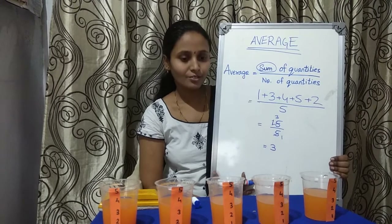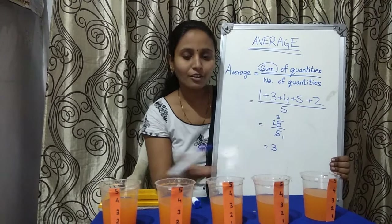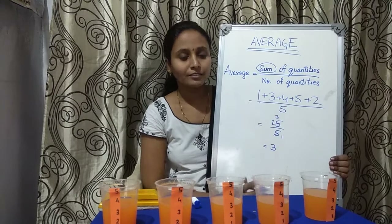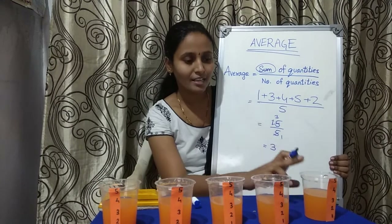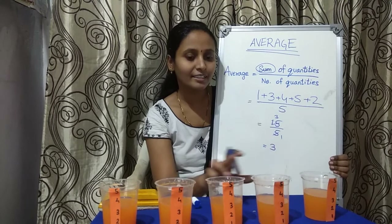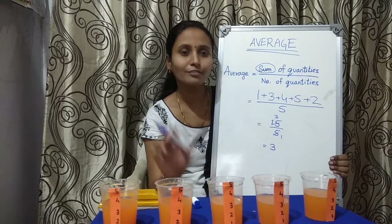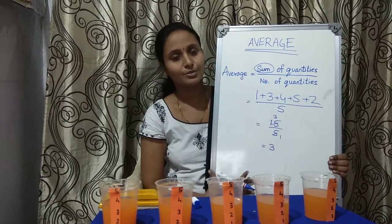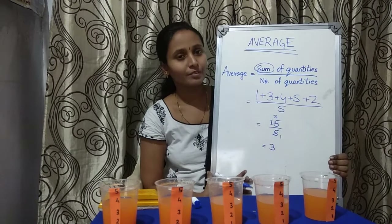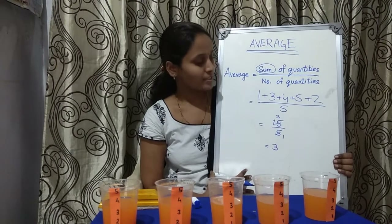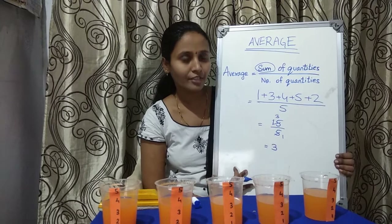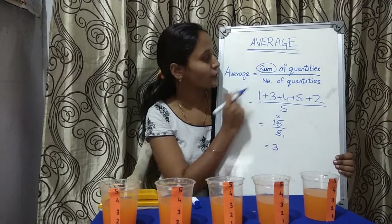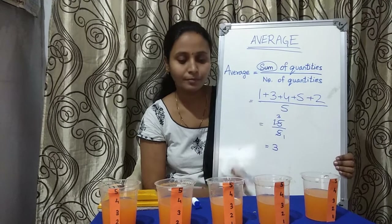So that's what we got here. All the glasses are having 3 units of juice. This is nothing but finding the average using the formula.